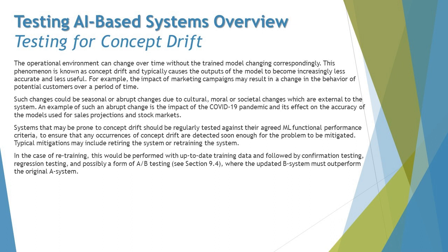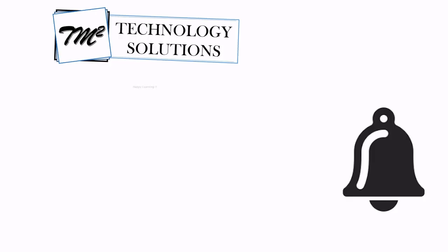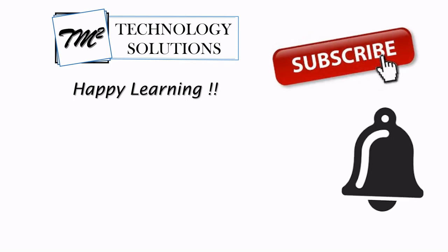To summarize, we have covered concept drift in this tutorial. Testing for it will certainly include retraining or retiring and building a new system, and at the same time you will have confirmation testing, regression testing, and A/B testing of the system. That's all from this particular tutorial. If you have any questions, feel free to comment below. Till then, keep learning, keep exploring, keep understanding the context. Thanks for watching and happy learning.